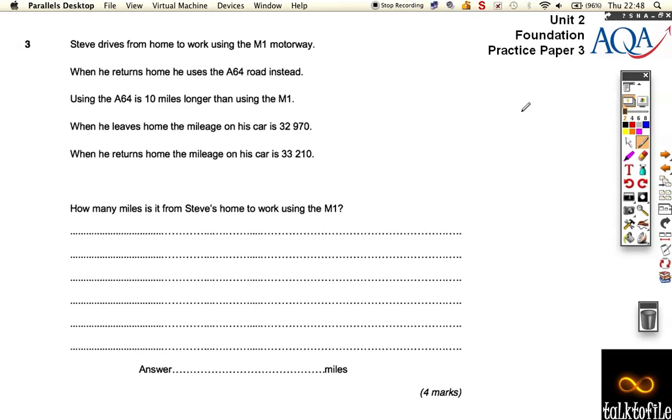Question number three is about Steve driving home from work. He goes home to work using the M1 and drives home using the A64. So he goes via the M1, comes back via the A64, and the A64 is 10 miles longer. We've got the mileage on his car, so we can work out how many miles total he did on that day.